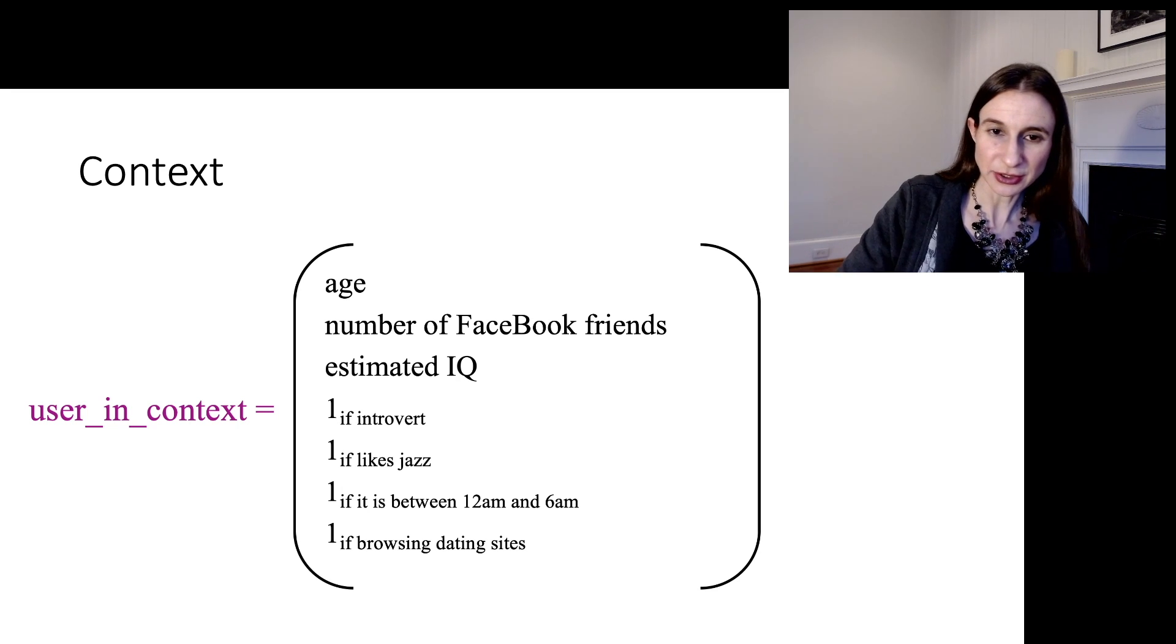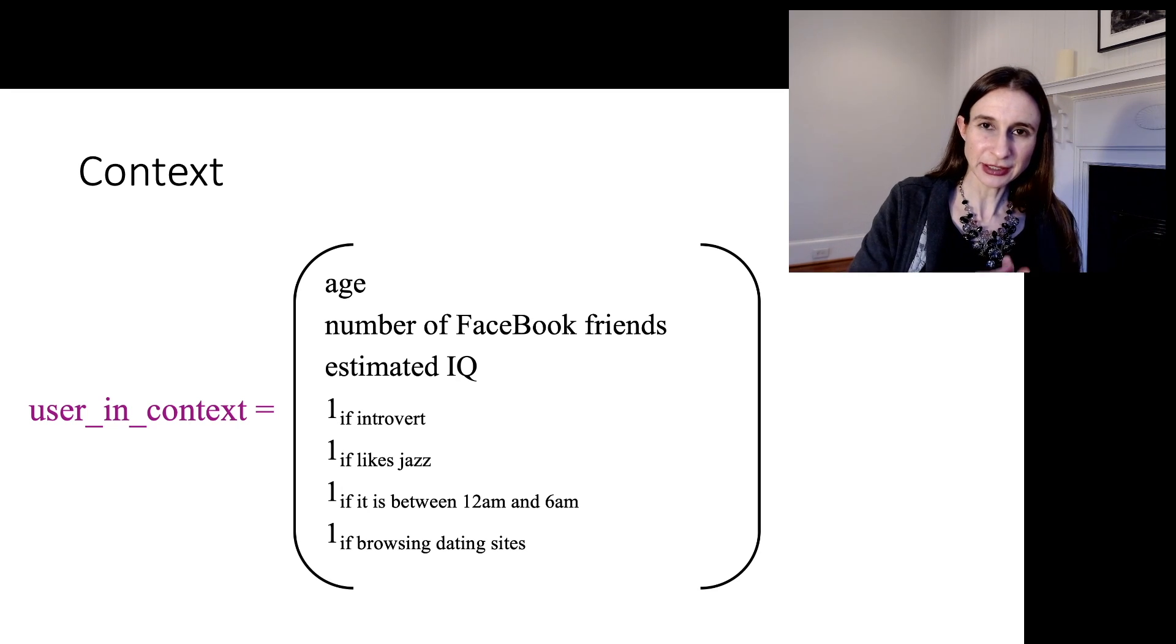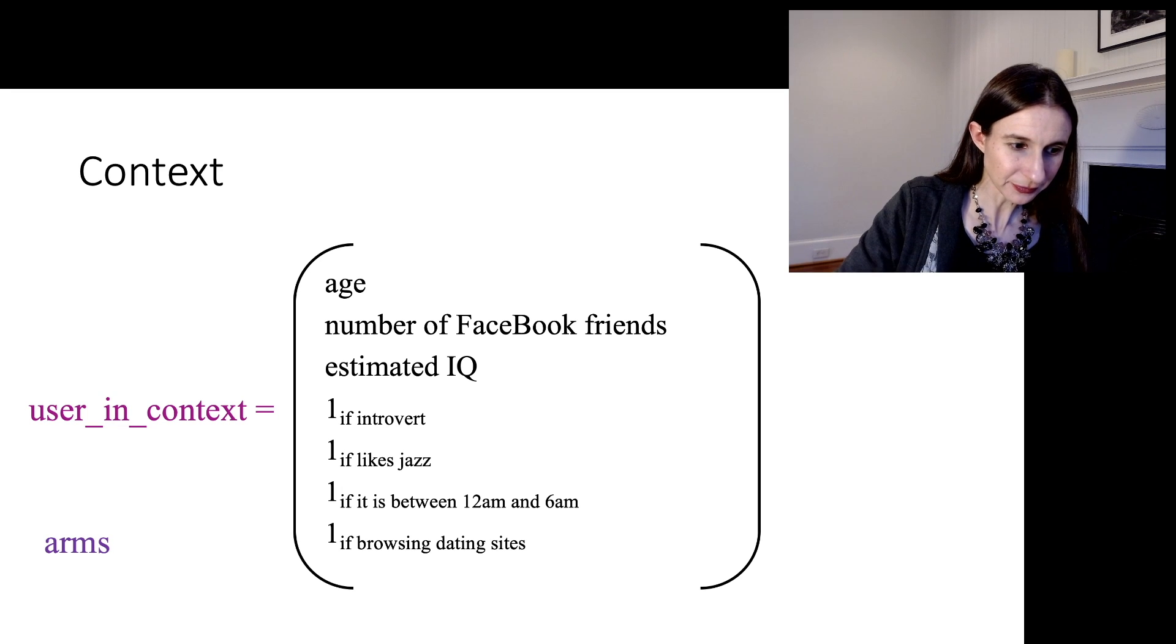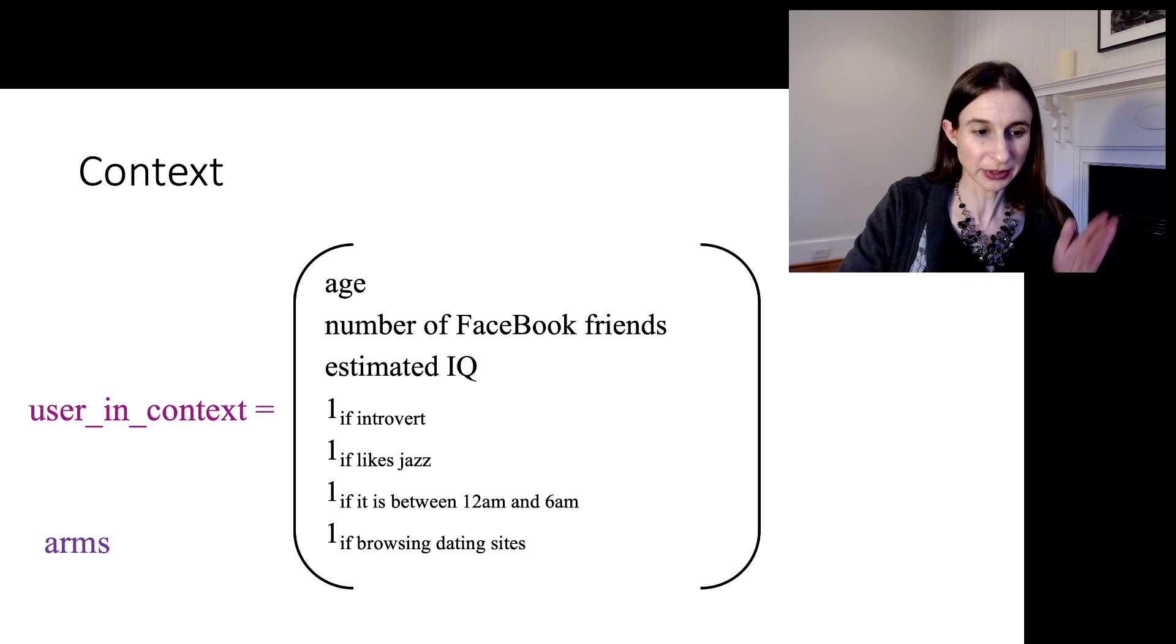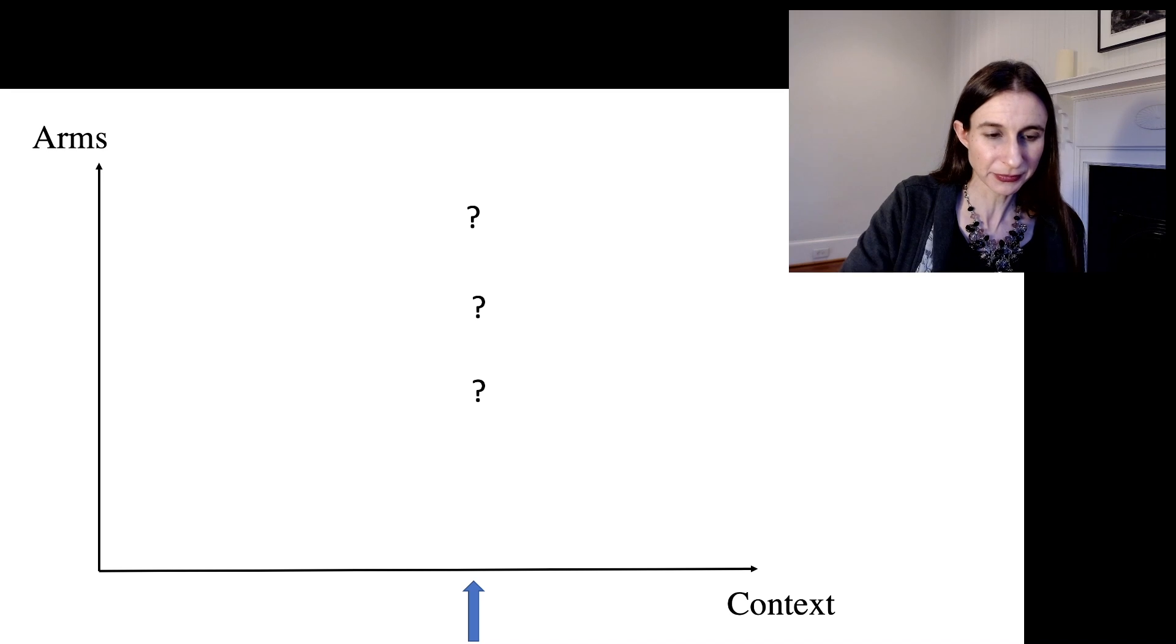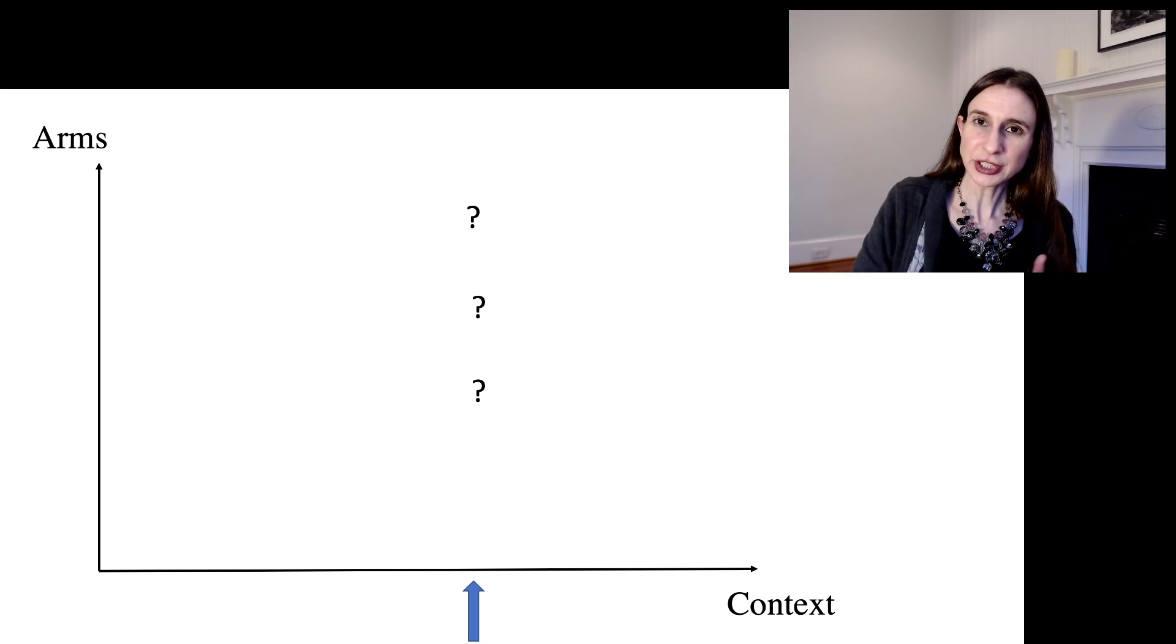So we have the user in context, and we're trying to figure out which arm to pull. And we have a collection of arms, so we have to make a choice among the arms that are available. Now for each context, we have to figure out which arm to pick.